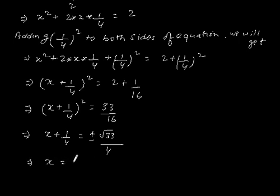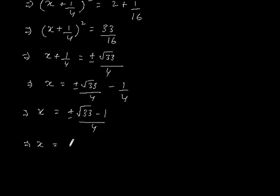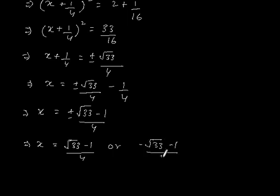This gives x plus 1 by 4 is equal to plus or minus root 33 by 4. Therefore, x is equal to (plus or minus root 33 minus 1) by 4, giving x equals (root 33 minus 1) by 4 or x equals (minus root 33 minus 1) by 4.